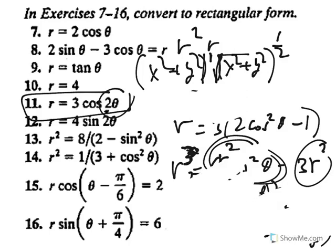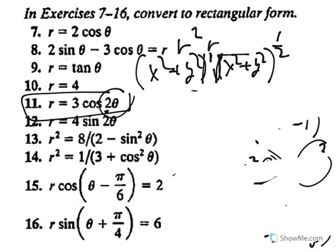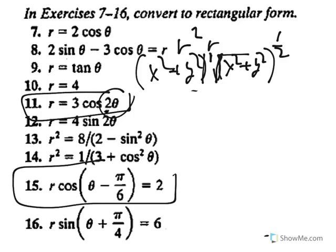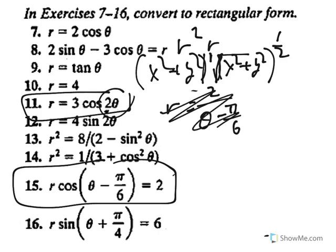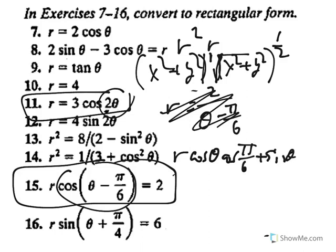So you could do some complicated things using these identities, even if we have no idea what these different curves look like. Just to show you one more. For number fifteen here, this was actually one that we graphed. It was like a line that did not pass through the pole. But I'm going to pretend I didn't know that. The only thing I can really do is do the expansion. Cosine a minus b is cosine a cosine b plus sine a sine b.